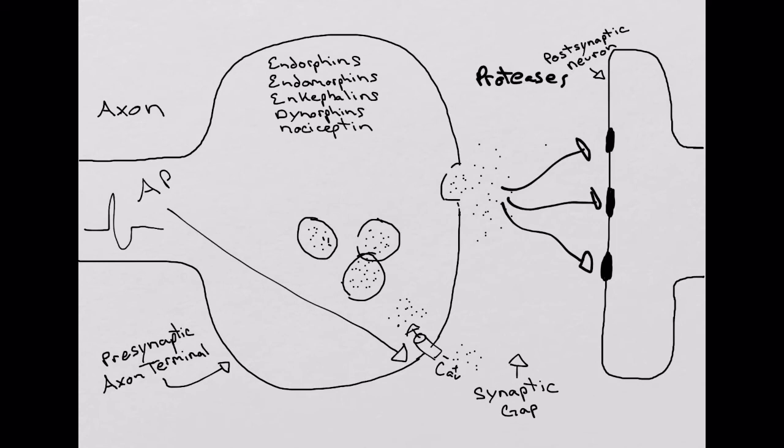And so when these vesicles empty out into the synaptic gap, what happens is the vesicle will basically end up making its way back to the cell body. So it will make its way out, and then a new one will come back and replace it.